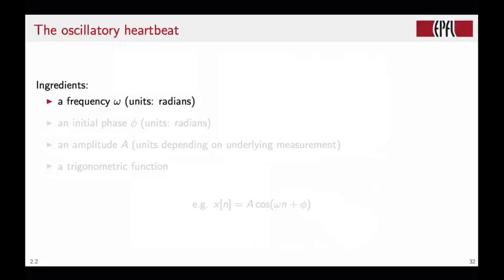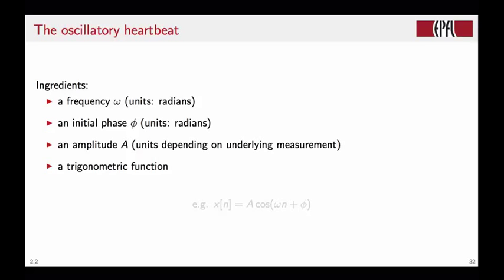The oscillation needs the following ingredients. First, we need a frequency. The unit will be radians. We will always look at the unit circle, and the full circle is in radians 2π. There will be an initial phase φ in the same unit, radians. There will be an amplitude. This amplitude will depend how we measure the physical phenomenon. And we therefore get the trigonometric function, which is the sequence x[n] which is given by A, the amplitude, times the cosine of ωn + φ. This is the basic ingredient of a trigonometric sequence that is going to be periodic and has an initial phase φ.